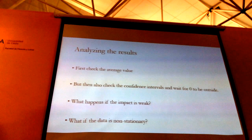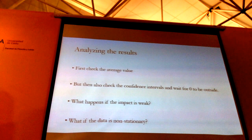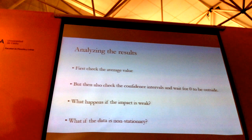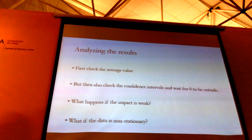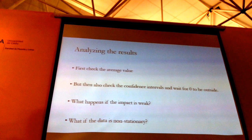What you do is first check the average value, but then you also want to know how well you can trust this average value. So you're going to check the confidence intervals around these average values, and make sure that zero is outside the confidence intervals. So you can be confident that the improvement is statistically significant. When you see papers, hopefully they do that — some of them don't, and they shouldn't. So you have an average value, you build confidence intervals, and you see if it's statistically significant.